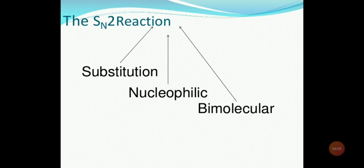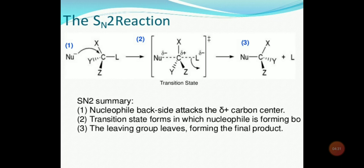Now, SN2 reaction. In SN2, S represents substitution, N represents nucleophilic, and 2 represents bimolecular or second order. So, SN2 is a Substitution Nucleophilic Bimolecular reaction, or Substitution Nucleophilic 2nd order reaction. It is a one-step reaction. The nucleophile attacks from the backside on the positive carbon center. We get a transition state intermediate where neither the nucleophile is fully attached to the molecule, nor the leaving group has fully left. As the reaction further proceeds, the leaving group leaves and the nucleophile is strongly attached to the product. All this process happens in only one step, which is why SN2 reaction is a one-step reaction.